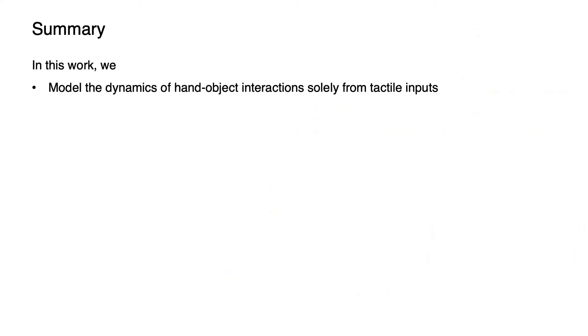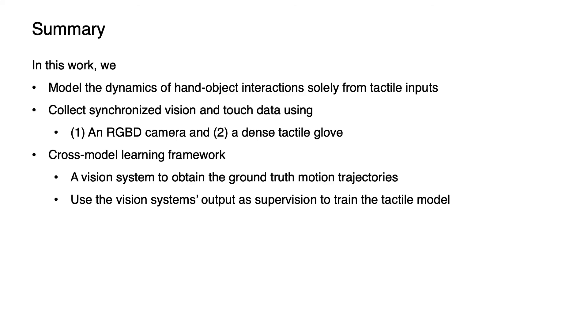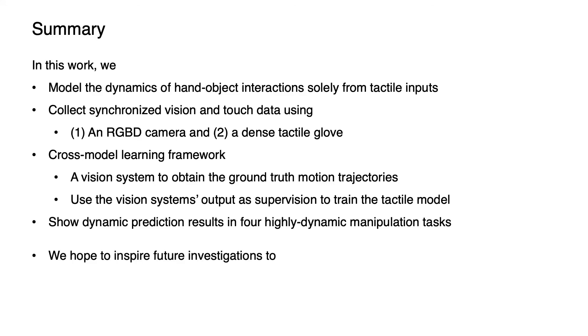In summary, we model the dynamics of hand-object interactions solely from tactile inputs. We collect synchronized vision and touch data using an RGBD camera and a dense tactile glove. We use a cross-modal learning framework, where our vision system obtains the ground-truth motion trajectories, and we use the vision system's output as supervision to train the tactile model. We show dynamic prediction results in four highly dynamic manipulation tasks. We hope to inspire future investigations to build better perception systems and intuitive models of the environment, leveraging the strengths of different sensing modalities. Thank you.